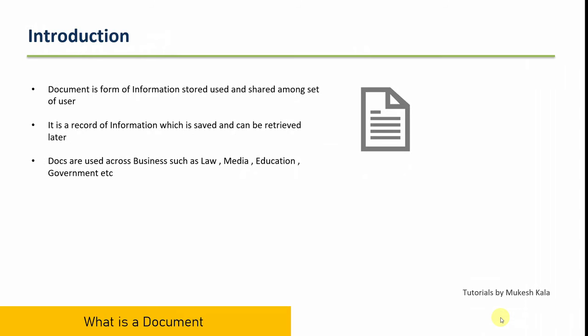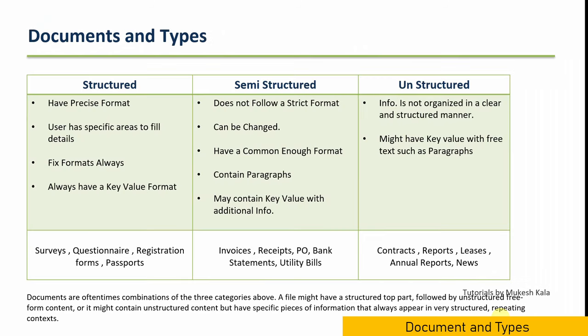So what exactly is a document? A document is a form of information stored, used, and shared across different users. If I want to share some information with you, I share it with the help of a document — it can be a PDF, it can be a Word file. It is a piece of information which is saved and can be retrieved later. That is the plain definition of a document. We use documents in business, law, media, education, and government offices.